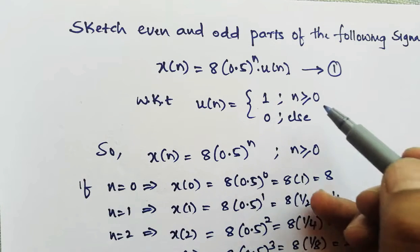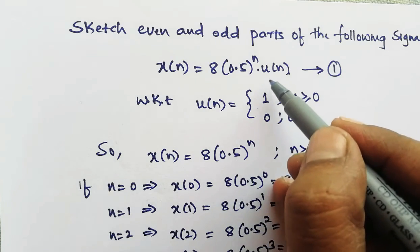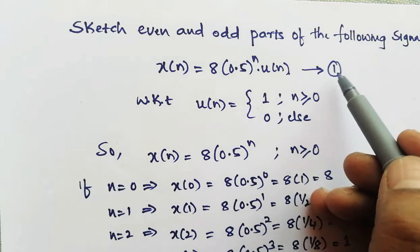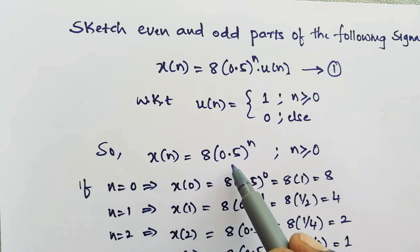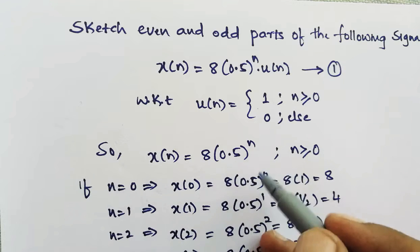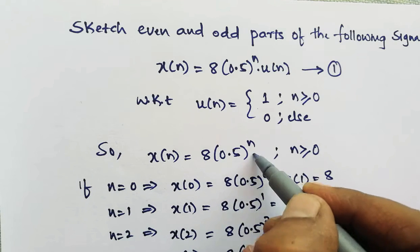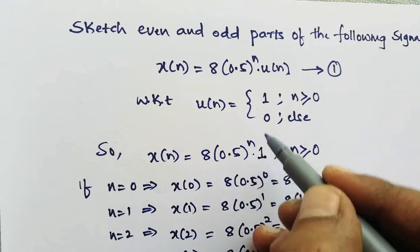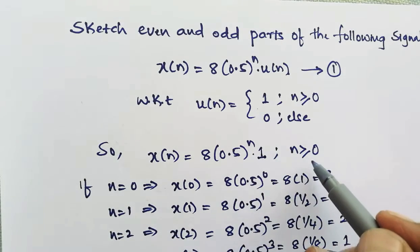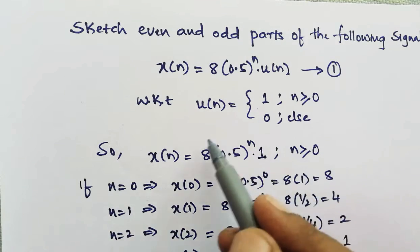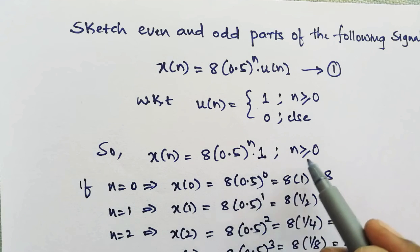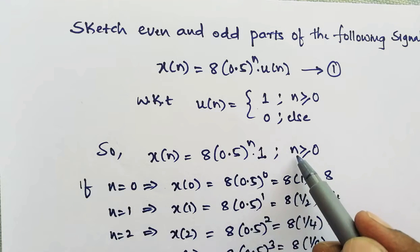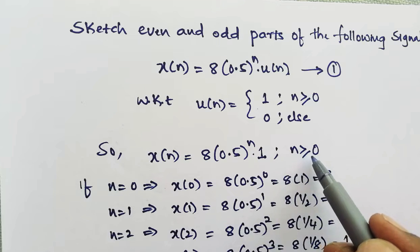If we substitute u of n by 1, the equation becomes x of n equal to 8 multiplied by 0.5 raised to n, multiplied by 1. Replacing u of n by 1 means n is greater than or equal to 0. So the entire signal x of n is present only for n greater than or equal to 0.